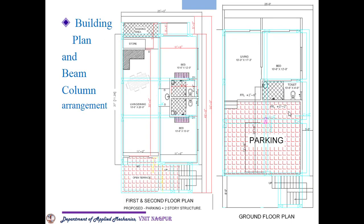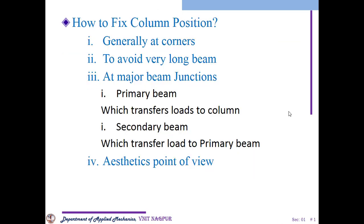Regarding column positioning in a building plan: first, corner columns are important because wind action may act on them, causing vertical deflections. We look at column orientations to avoid very long beams. Columns are also placed at major beam junctions — for example, where the primary beam transfers load to the column, and where the secondary beam transfers load to the primary beam. Columns are also provided for the aesthetic view of the structure.